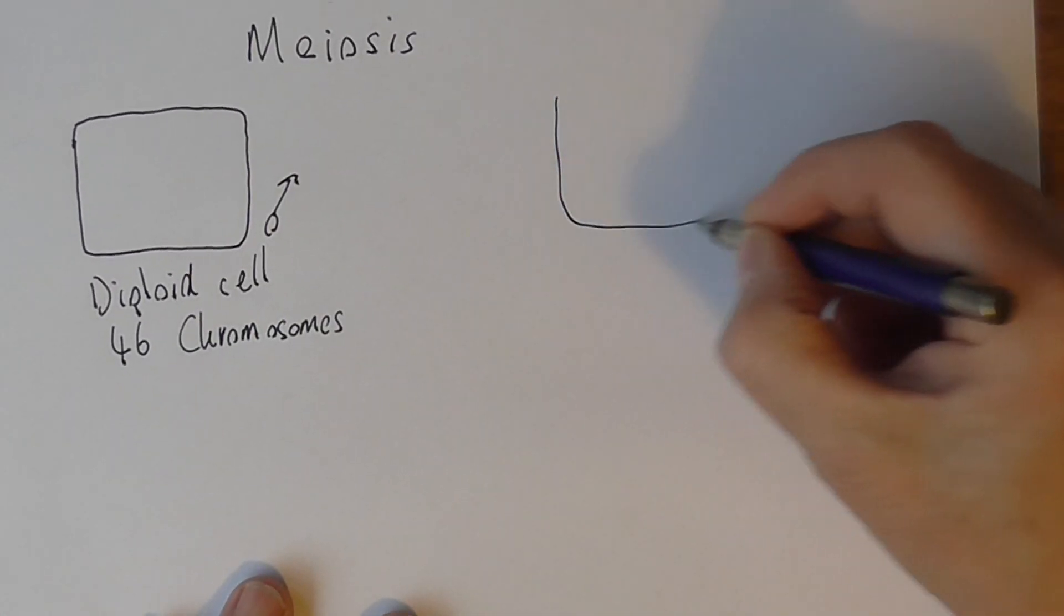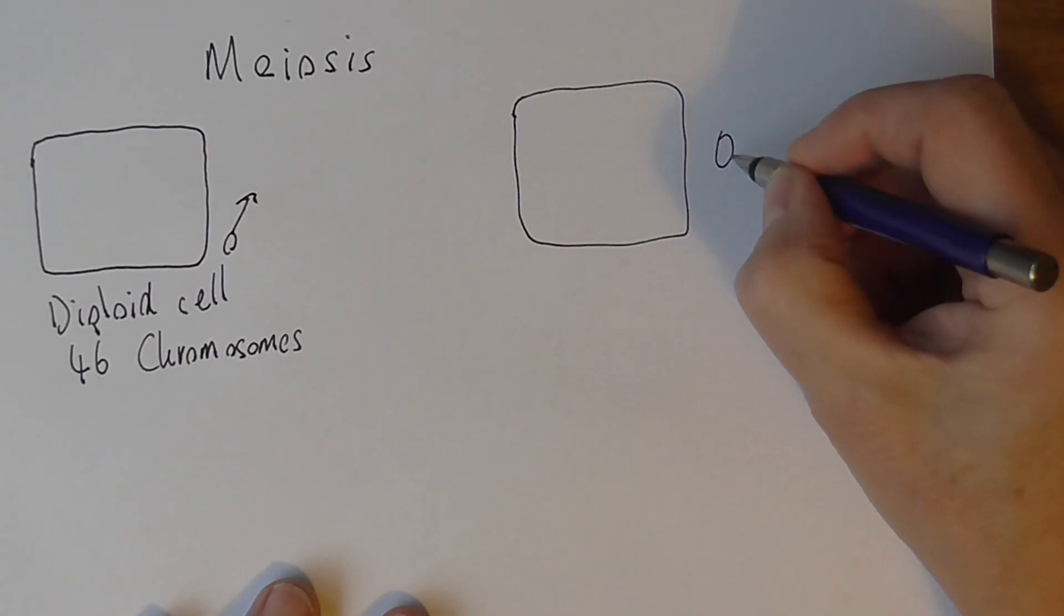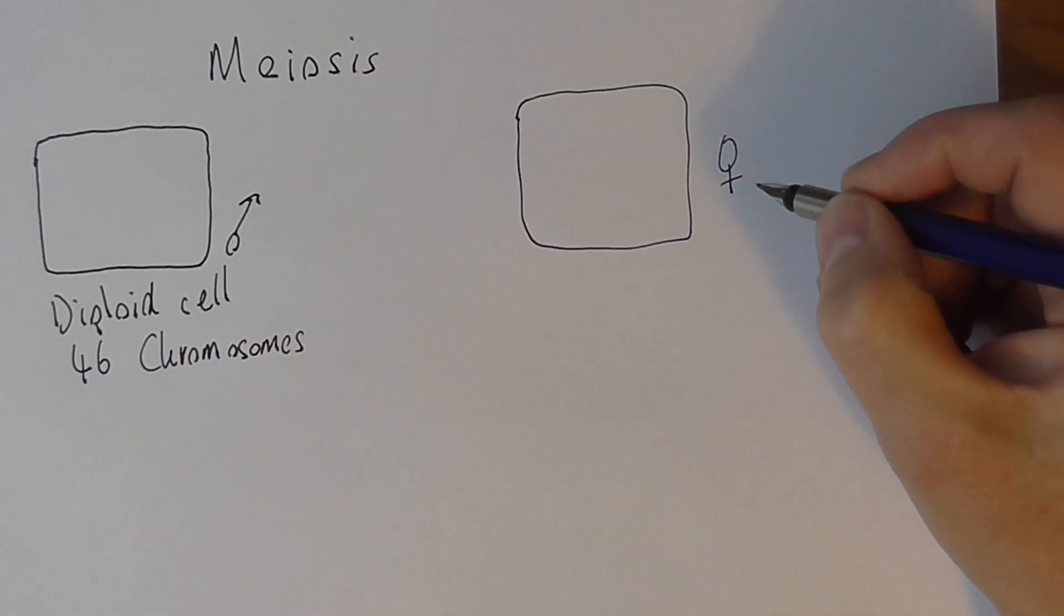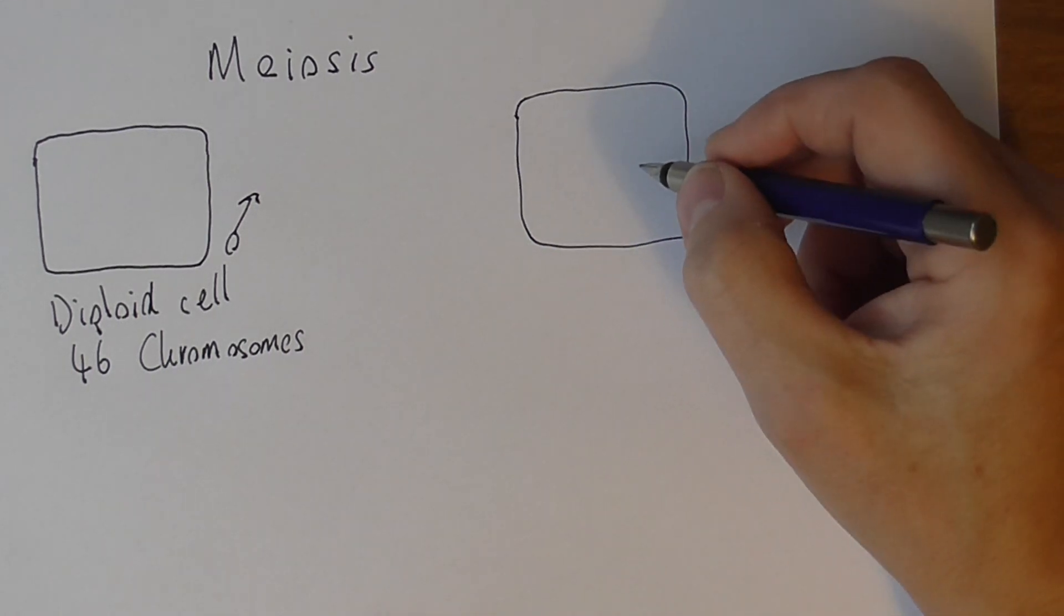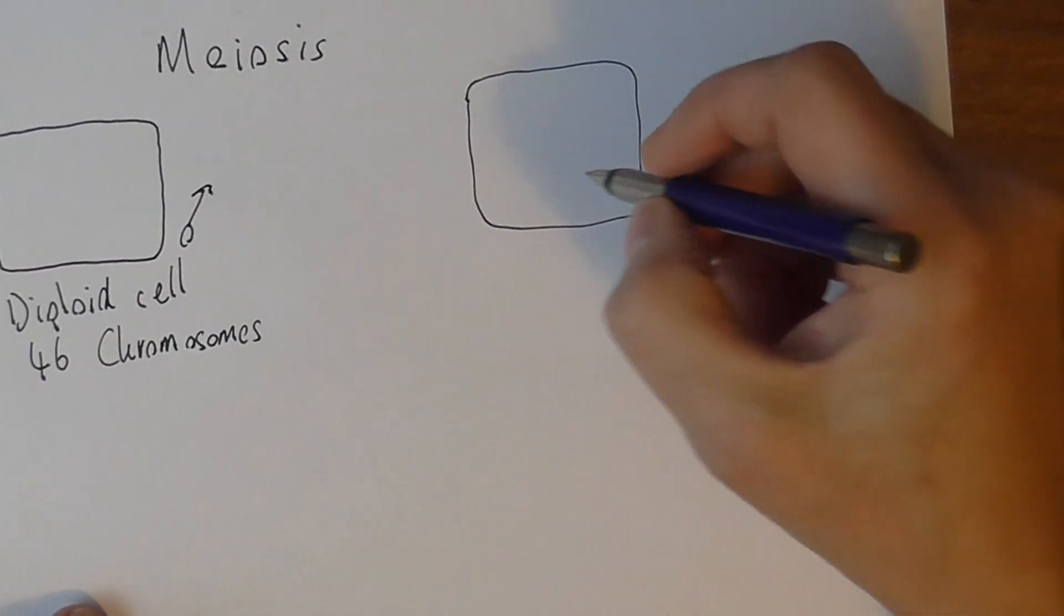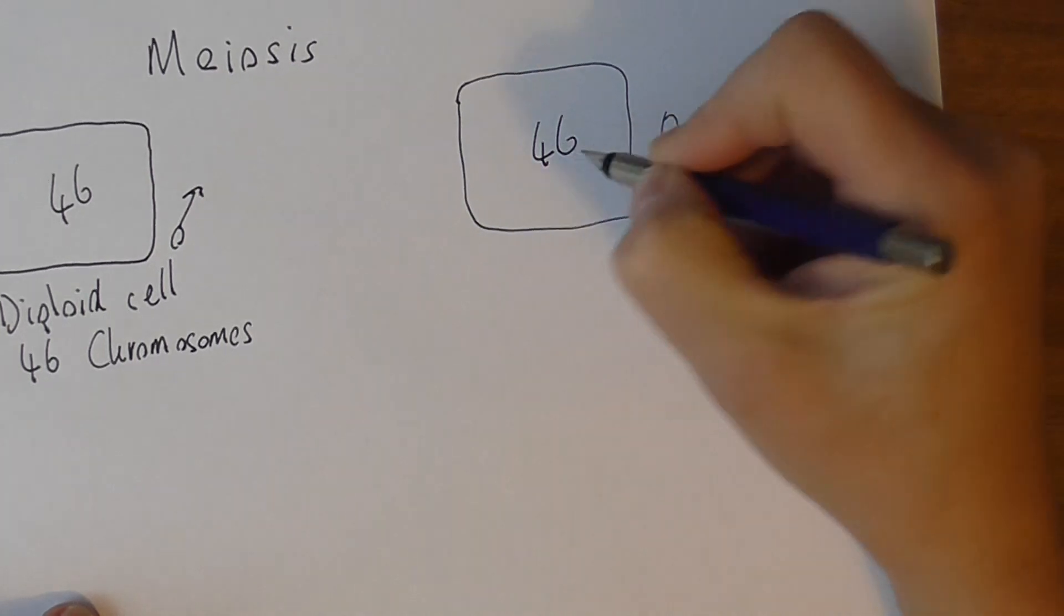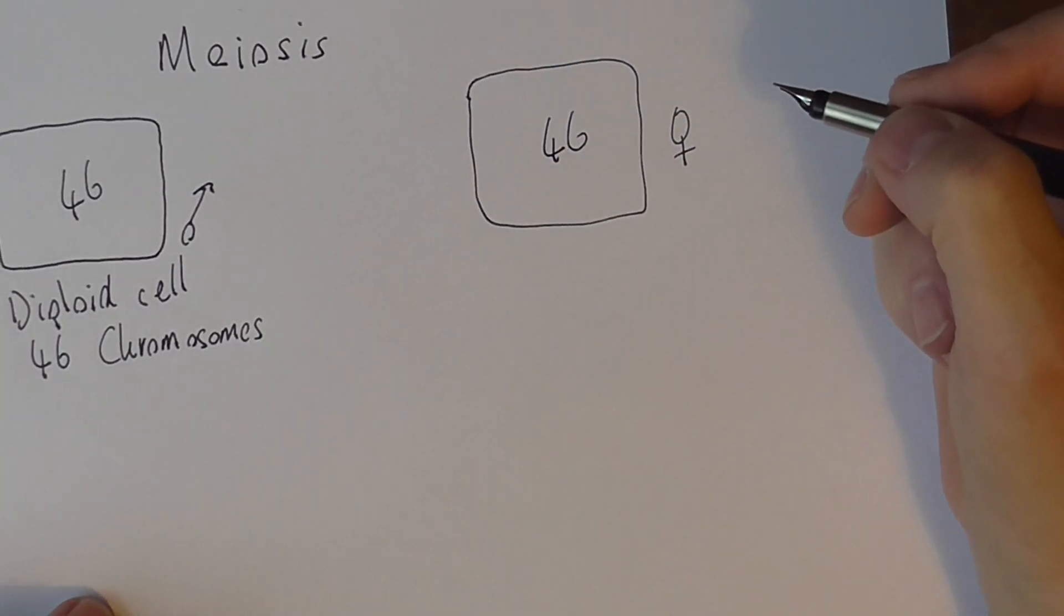This one is in the ovaries, so it's a female one. Actually, this process of meiosis in the female starts just a very short time after conception of the individual, in early fetal life. Fascinating process, but it's also a diploid cell, so this contains 46 and this contains 46.